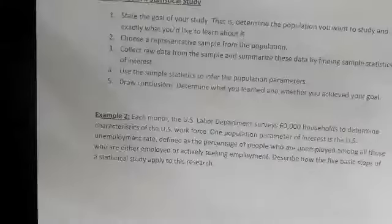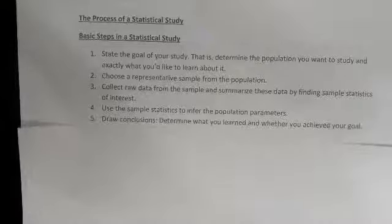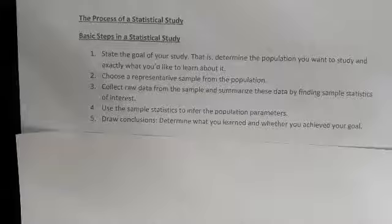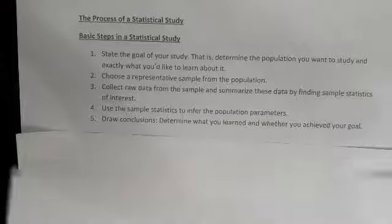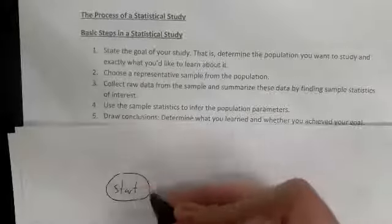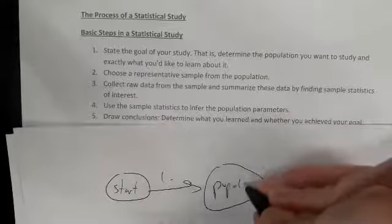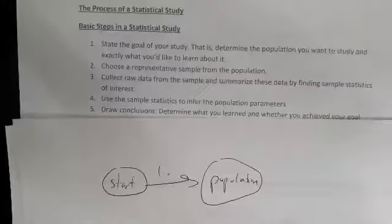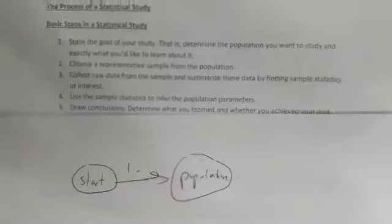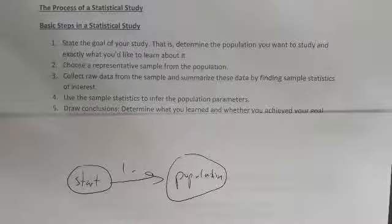They give five basic steps in a statistical study. Step one: state the goal of your study — determine the population you want to study and exactly what you want to learn about it.